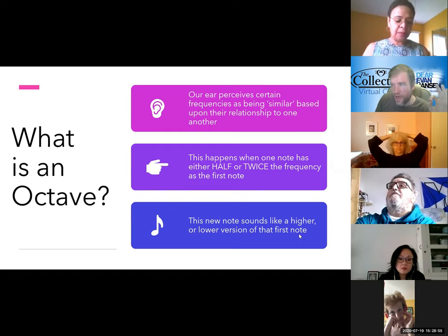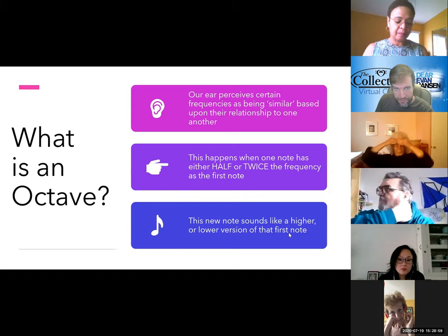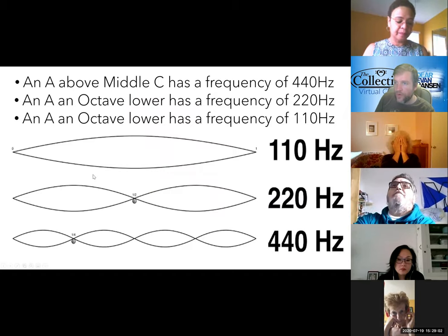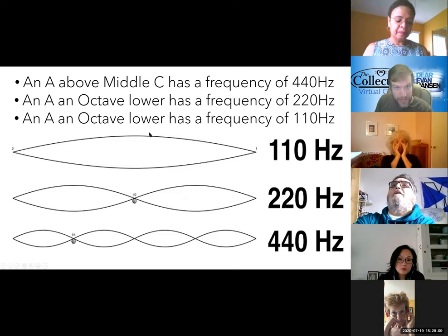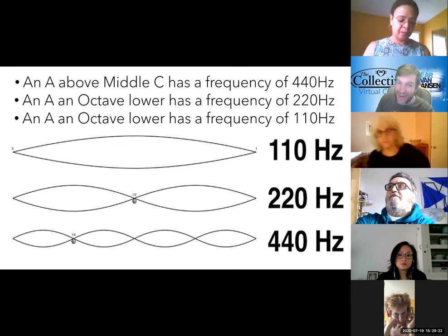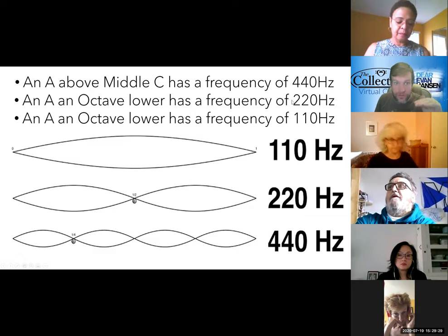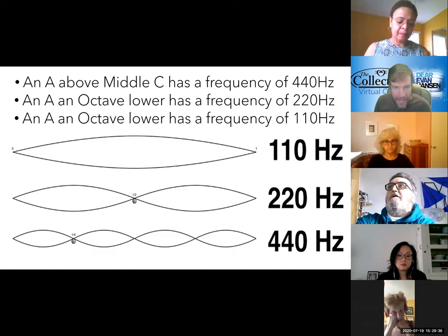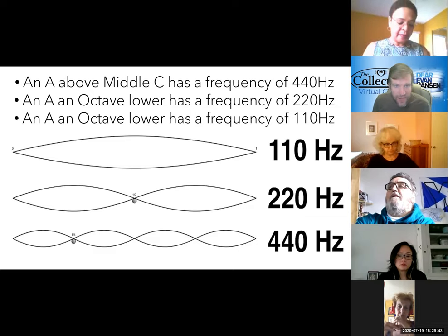The new note sounds like a higher or lower version of that first note. An A, the note A above middle C, has a frequency of 440 hertz — the sound wave hits your eardrum 440 times a second, and our brain hears that as an A. If we listen to a frequency exactly half of that, so 220 hertz, we hear that as the same note — we hear it as an A, but it sounds like a lower version of the same note. This is in nature — nobody invented this. Those notes to our brains sound the same, but they're like a higher and lower version of one another.